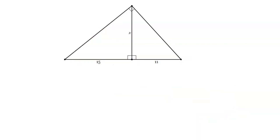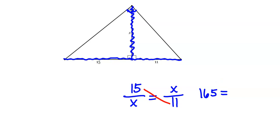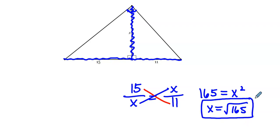Let's look at one more example in which the skier is heading down the middle. The middle, which in this case is x, is the geometric mean. When the skier gets to the bottom, they can go to the chairlift on the left side, which is 15, or to the restaurant on the right side, which is 11. So x is the geometric mean of 15 and 11. Cross-multiplying: 15 times 11 gives us 165, and x times x gives x squared. Taking the square root of both sides gives √165, which cannot be simplified, so we leave it as is.